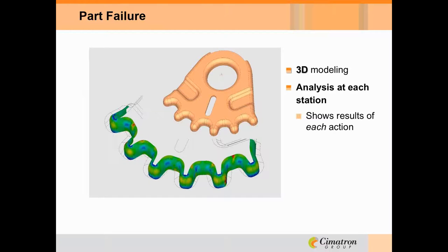The important thing is we went through the analysis step by step to accomplish this. When looking at parts like this that could fail, we need a good 3D model to run the analysis on. It's not just looking at it one time to see if it'll pass or fail, but looking at what we're doing to the metal station by station — because very often the solution lies in understanding what each station is going to do to affect the part.